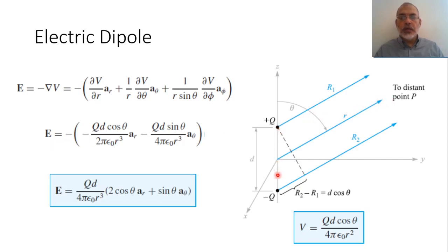The two minus signs combine to give a positive result. Taking q·d over 4πε₀·r³ as a common factor, the electric field becomes: E = (qd / 4πε₀r³) times (2·cosθ r̂ + sinθ θ̂).